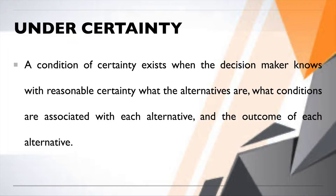For each alternative A, B, and C, you know what conditions are attached to accomplish that decision. There are conditions associated with each alternative which you are completely aware of. The outcome — the final performance — is also known: what can you expect if you choose option A, B, or C.